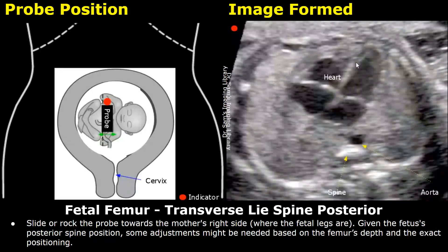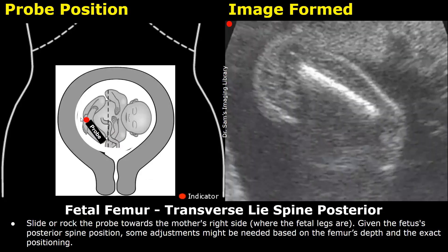This is a fetus in a transverse lie with a posterior spine where the head is towards the mother's left side and the legs are towards the mother's right side. To find the legs, move the probe towards the mother's right side. Slide, angle, and rotate the probe accordingly to get the best view of the femur on the other side as well. Thank you so much for watching — please subscribe and stay tuned for more imaging videos.